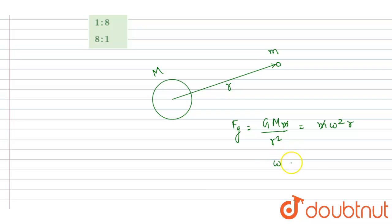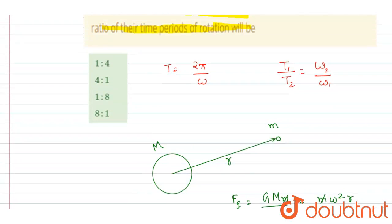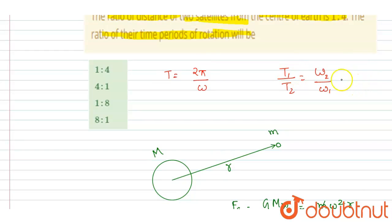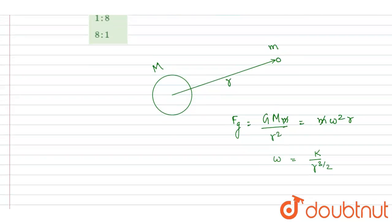You can see ω is inversely proportional to r^(3/2). So here we want the ratio of the time period. It will be inverse of the ratio of the ω.